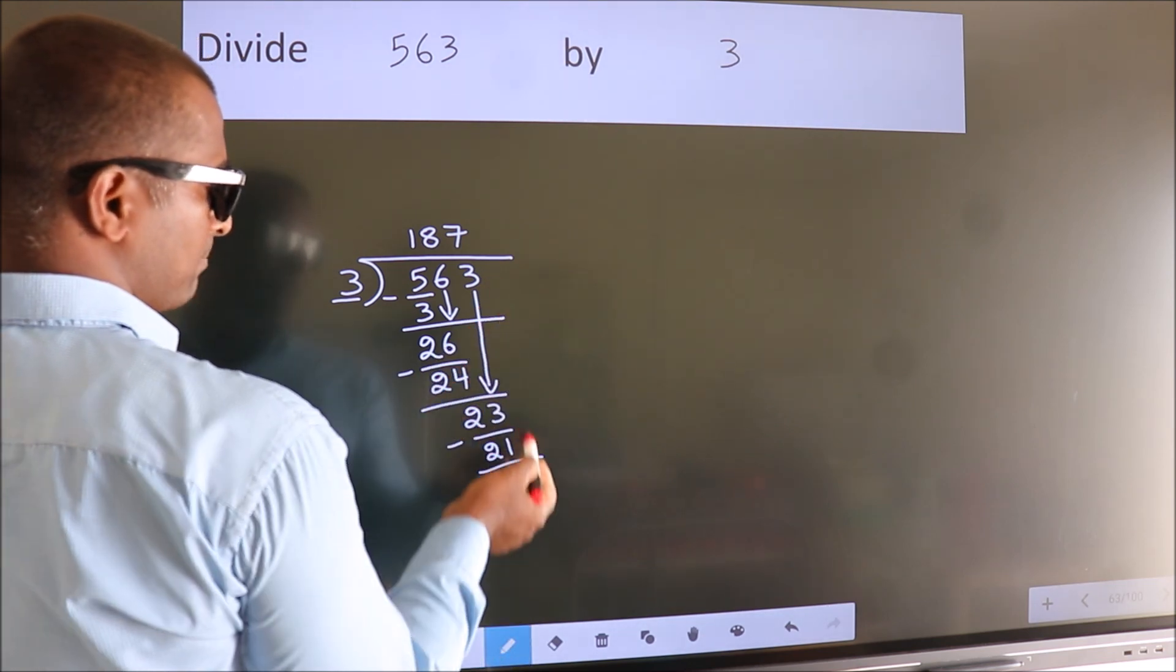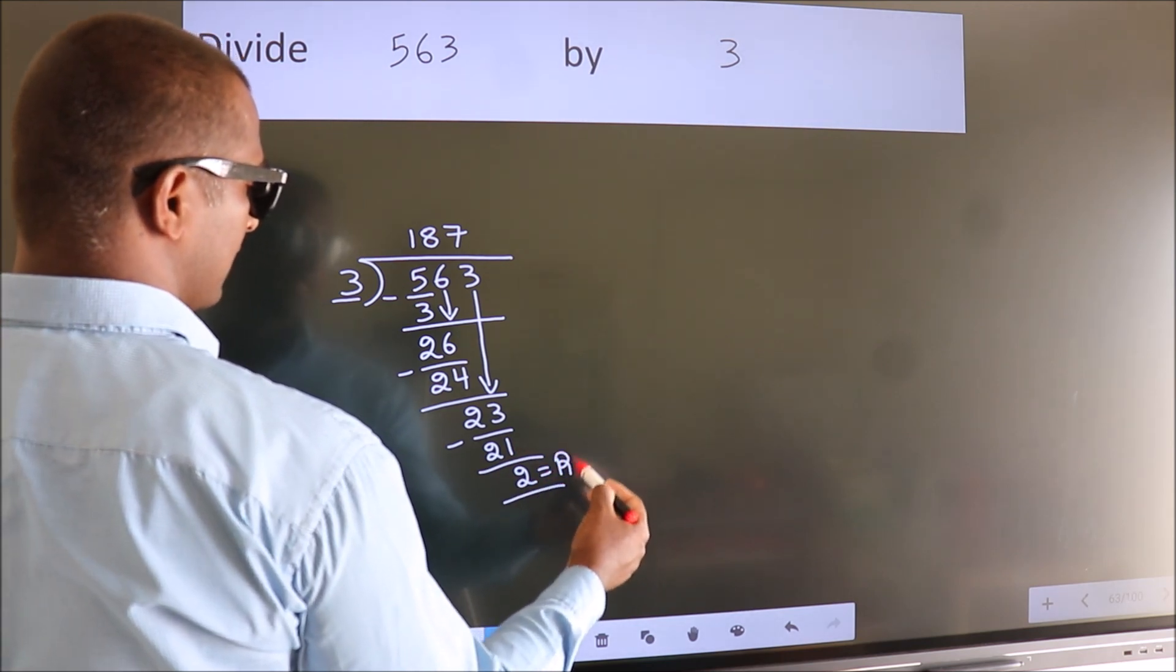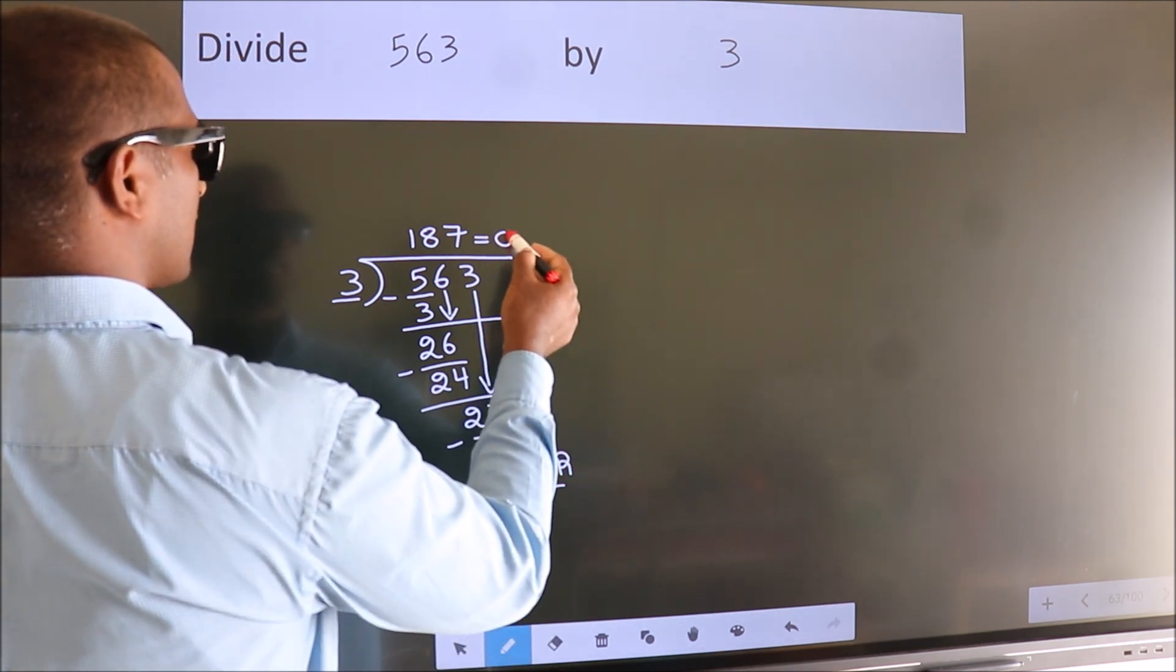No more numbers to bring it down. So, we stop here. This is our remainder. This is our quotient.